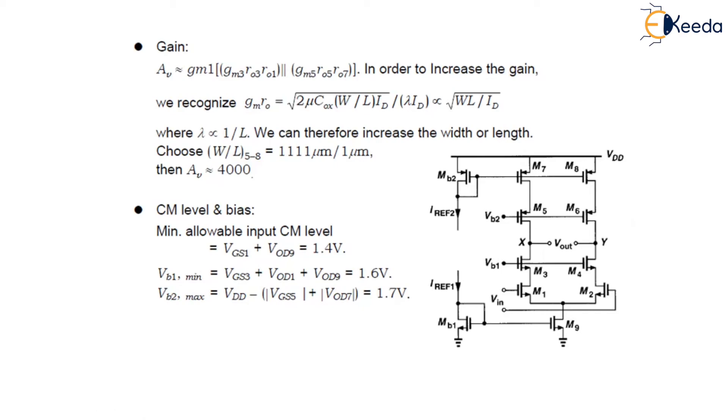While VB2 max is given as VDD minus VGS5 magnitude plus VOD7 which is equals to 1.7 volts. So, this is all about the design of fully differential telescopic op-amp. In the next lecture, we will study about folded cascode op-amp. Thank you.